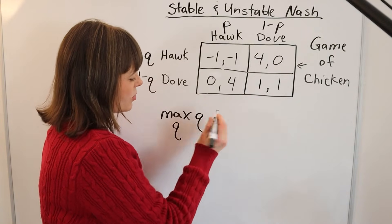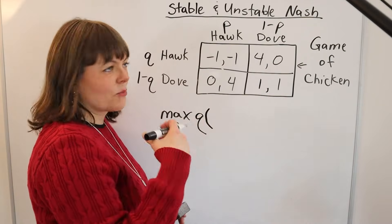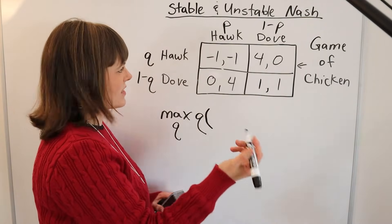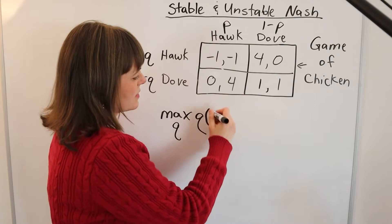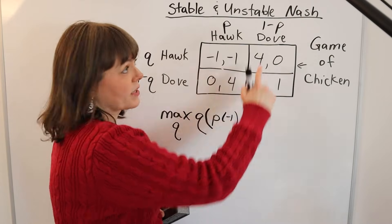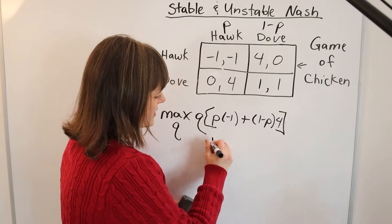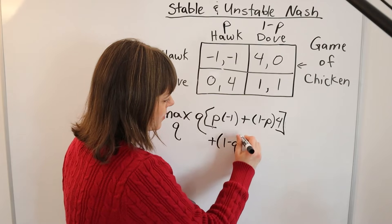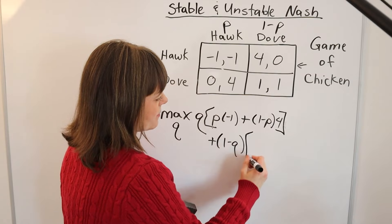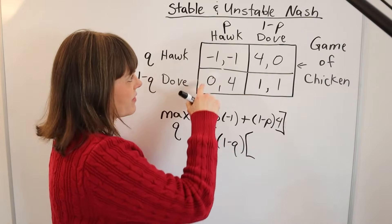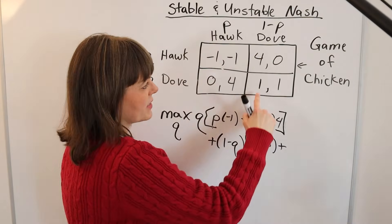It's Q, the probability you go Hawk, times the payoff if you go Hawk, which we just figured out: P times -1 plus 1-P times 4. Plus 1-Q, the probability that we as player one choose Dove, times the payoff if we choose Dove, which is P times 0 plus 1-P times 1.